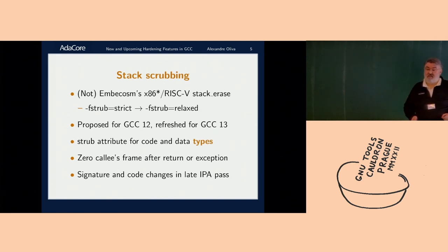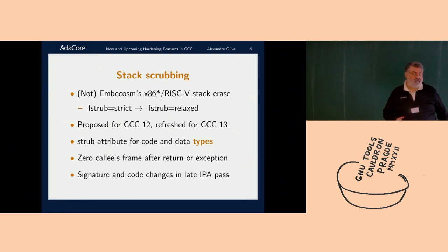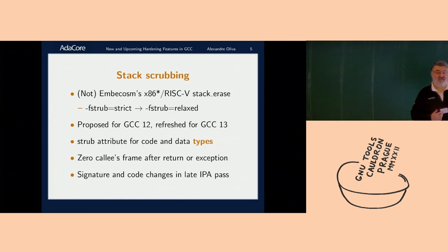We proposed stack scrubbing for GCC 12 — it didn't make it, it was a little too late. Hopefully GCC 13 will get it. We introduced an attribute you can use to mark types of functions or variables. The way it works is that when you call a function with stack scrubbing enabled, the caller will scrub — will zero — the stack. The caller is modified, and this makes things a lot easier. You don't have to get the function to scrub its own stack before returning; you can do that in a context that is far more flexible.